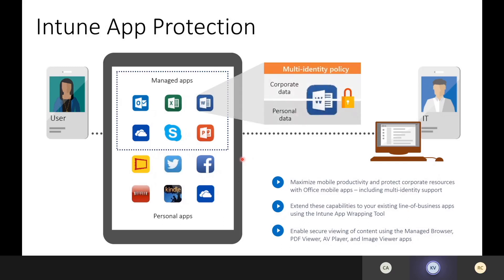These policies are identity-aware. That means a user doesn't have to have two different email applications — one for personal context, one for corporate context. A user can have an Outlook mobile profile for personal email and another for corporate email in the same application. The app protection policies only focus on the corporate identity. Even within the same application, there is a separation of corporate and personal, because the policy is smart enough to understand that personal identity data is not its concern. But it does provide governance of data even between those two contexts.